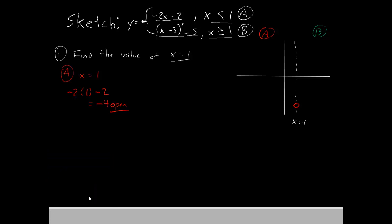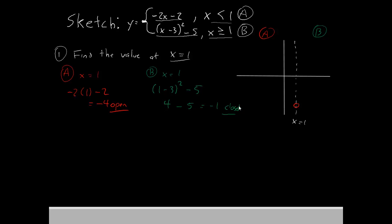Now we'll repeat the process for piece b. With x equal to 1, the function becomes 1 minus 3 squared minus 5. Well, 1 minus 3 is negative 2, squared makes 4, minus 5 gives us negative 1. Notice our condition contains greater than or equal to, which means it is a closed dot. So we'll go to negative 1 and make a closed dot.